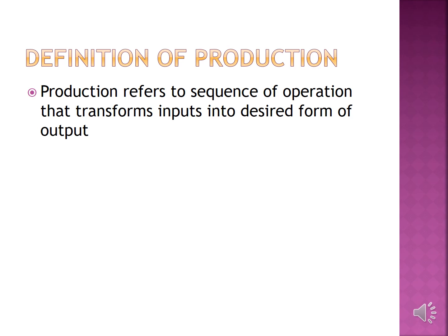Let us understand the definition of production. Production refers to a sequence of operations that transforms inputs into a desired form of output. It is a process in which raw materials are transformed into semi-finished goods and semi-finished goods are transformed into finished goods. There are various levels of transformation: first, transformation by disintegration; second, transformation by integration, where several components are used as input to obtain one product as output; and transformation by service, where operations add value or utility to items.